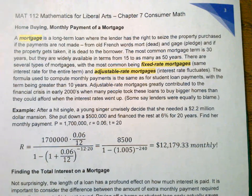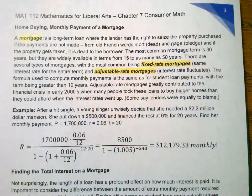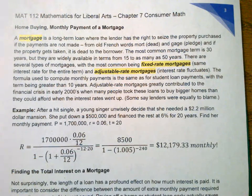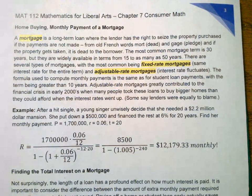Adjustable rate mortgages greatly contributed to the financial crisis in the early 2000s, when many people took these adjustable rate loans to buy bigger homes than they could really afford. When the interest rates went up, some say the lenders were equally to blame because they let anybody who wanted borrow these loans, even though their credit said they really shouldn't be affording that.